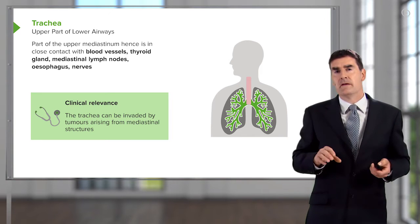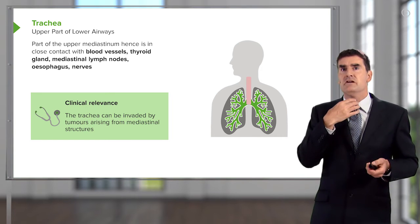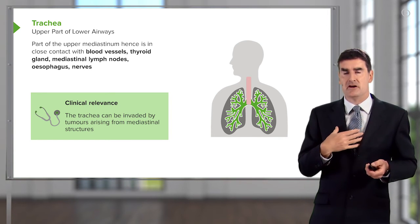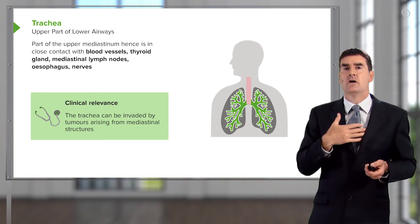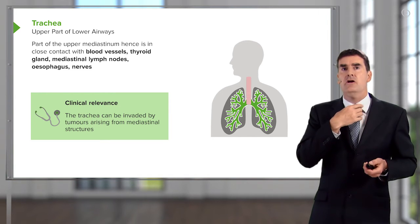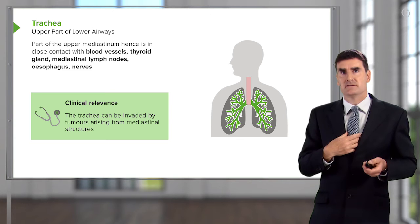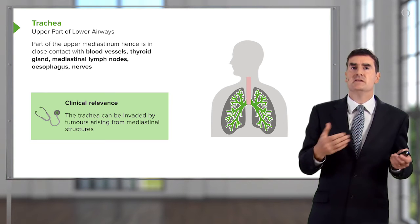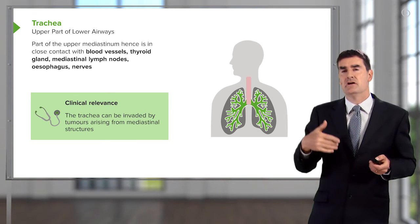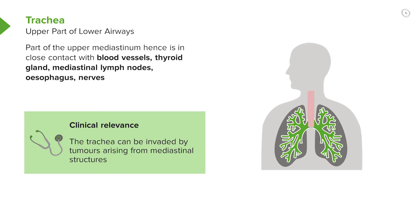The important thing about the trachea is that because it's running through the mediastinum — the structures between the right and the left lung — it's running next to blood vessels, the thyroid gland, mediastinal lymph nodes, the esophagus, and a variety of nerves. That makes it at risk of any problems affecting those structures also affecting the trachea. For example, it's not uncommon for very large mediastinal lymph nodes to cause partial obstruction of the trachea.